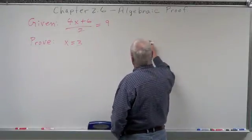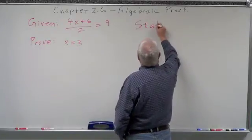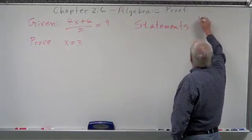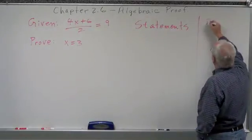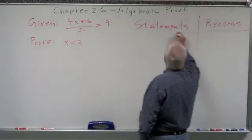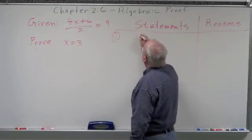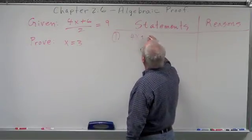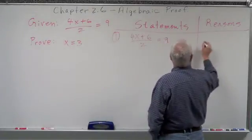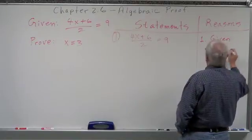Two-column proof — here goes. We're going to have statements and we're going to have reasons. Statement number one is: 4x plus 6 divided by 2 equals 9. The reason for statement number one is: Given.